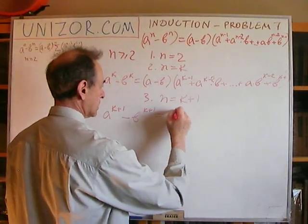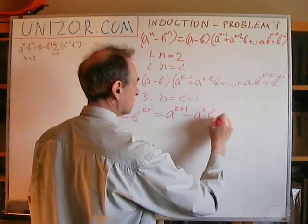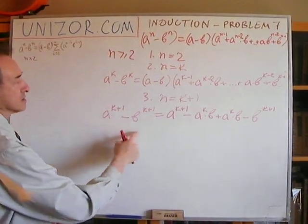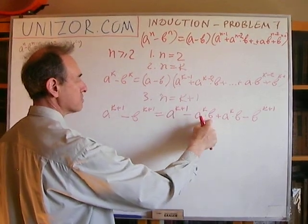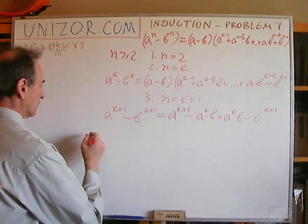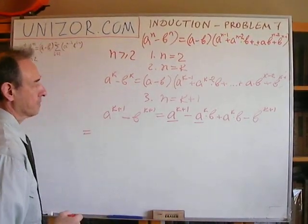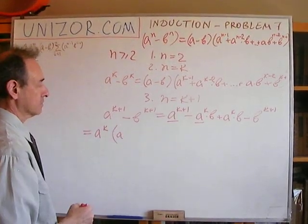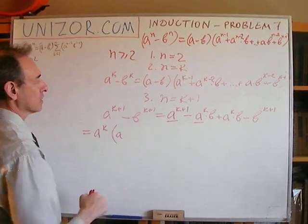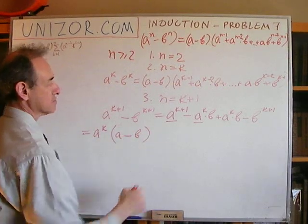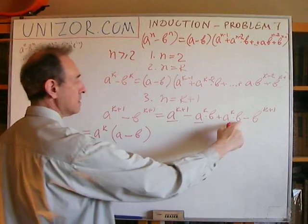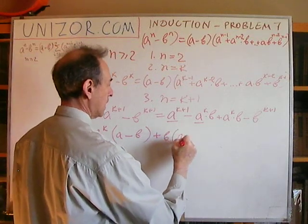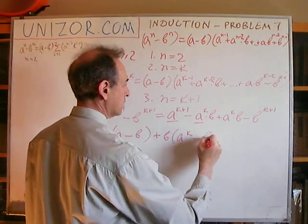Let's do it this way: I subtract a to the k times b and add a to the k times b, then also add and subtract terms to rewrite a to the k plus 1 minus b to the k plus 1 as: a to the k plus 1 minus a to the k times b, plus a to the k times b minus b to the k plus 1. Then I factor out a to the power of k from the first group, leaving a minus b, and factor out b from the second group, giving b times a to the k minus b to the k.